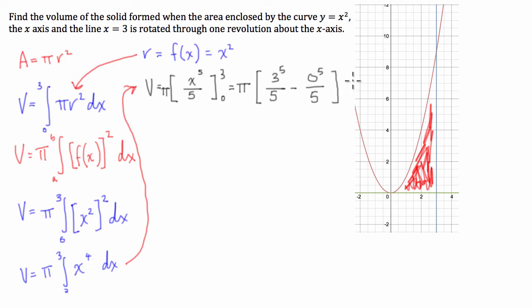And what we're left with there is 3 to the power of 5, where we have 3, 9, 27, 81, 243. So the volume is going to be equal to pi times 243 divided by 5. And finally, we can just multiply the pi into the bracket and finish up with volume equal to 243 pi over 5 units cubed.